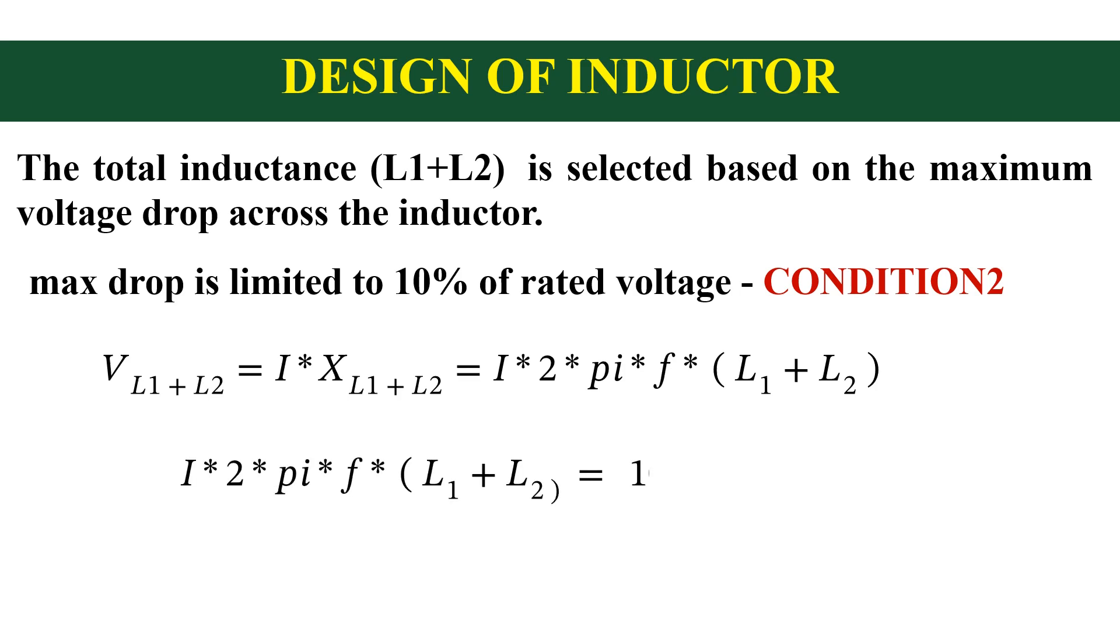Then, i into 2 pi f into L1 plus L2 is equal to 10% of V. We know that current can be written as power divided by voltage, that is S divided by V.